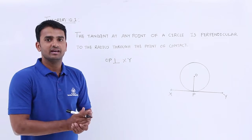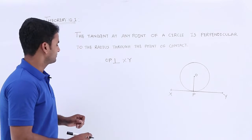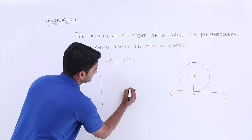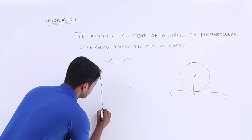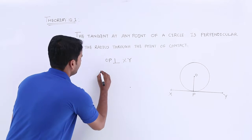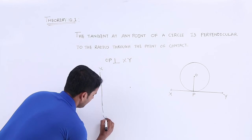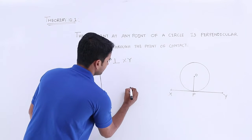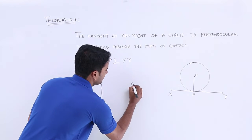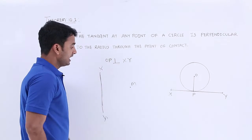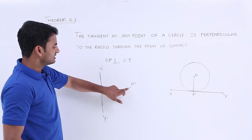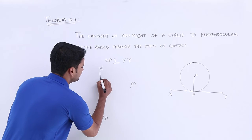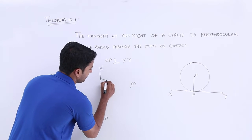Before we start with the procedure, let me explain a small concept. Let's take a line and a point. Let's consider this line as X dash Y dash, and this point as M. Can you guess the shortest distance between this point and the line?